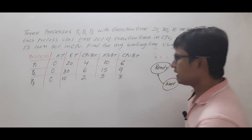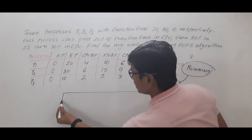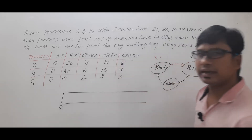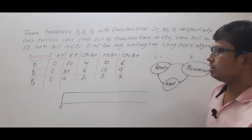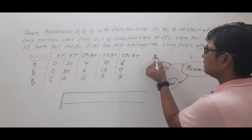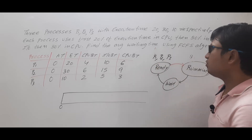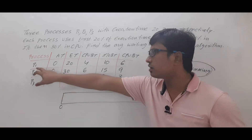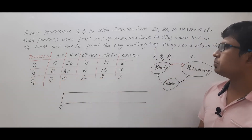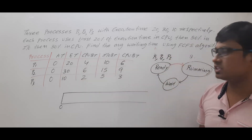Let me draw the Gantt chart. If we can draw the Gantt chart properly, then half of our question is completed. The Gantt chart will always start from 0 units of time. At 0 units of time, processes P1, P2, and P3 are in the ready state. As the order of arrival is P1, P2, P3, and it is a first come first serve algorithm, process P1 will be dispatched to the running state.